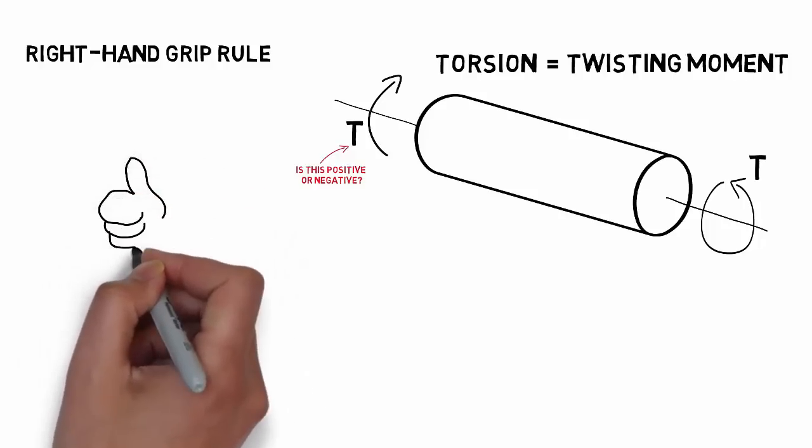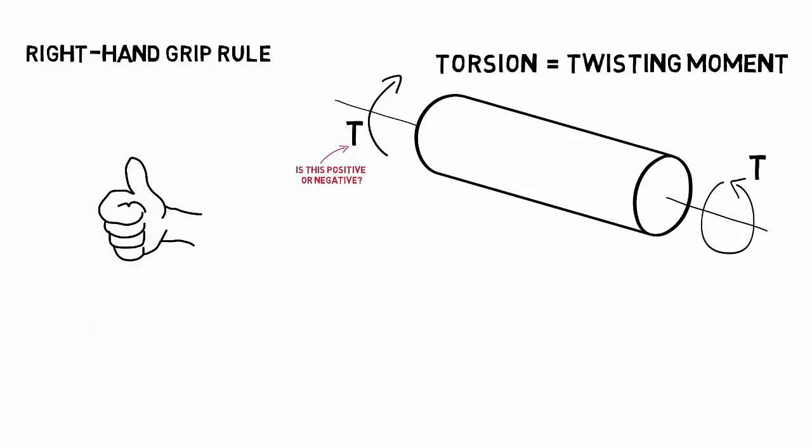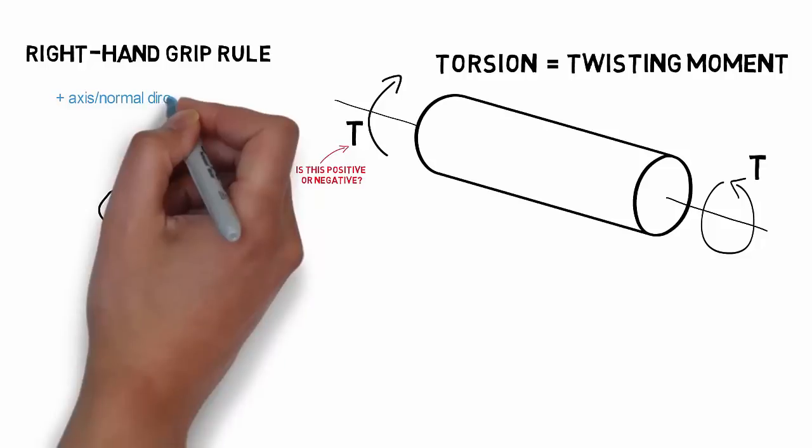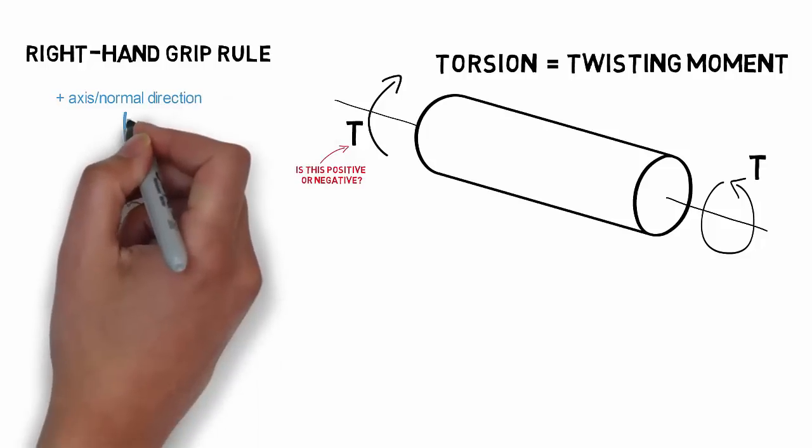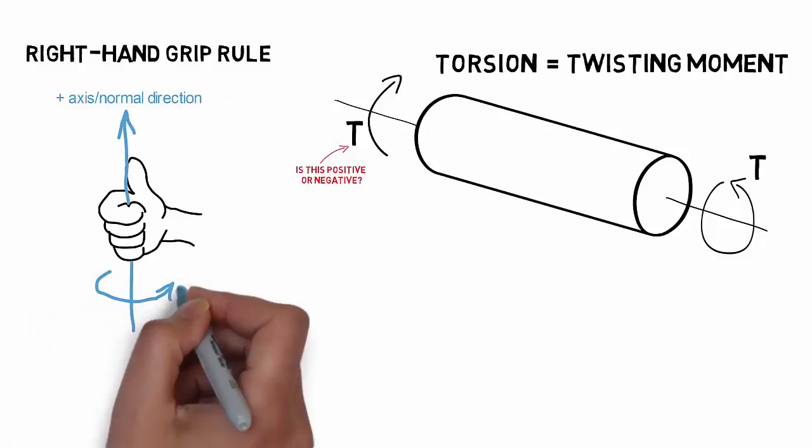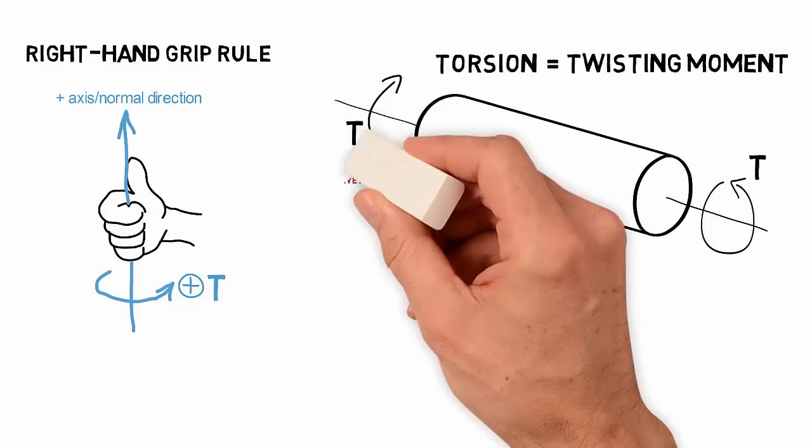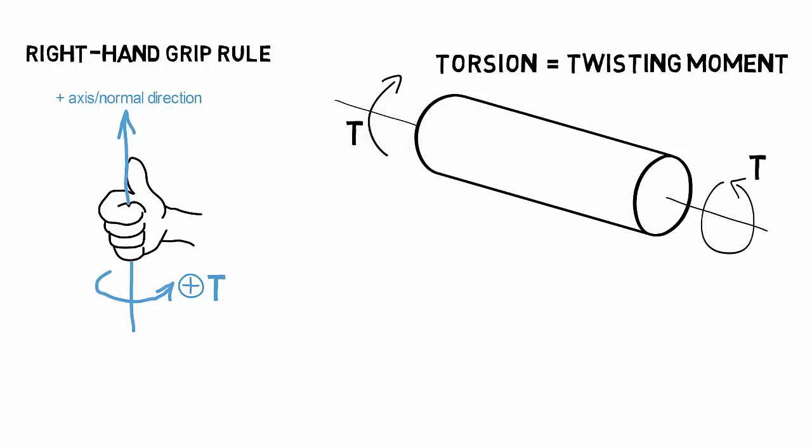Taking your right hand in a gripped thumbs up position, align your thumb with the axis of the shaft, with the tip of your thumb pointing in the outward normal direction of the shaft section. With this alignment complete, your grip fingers point in the direction of a positive torsional moment.